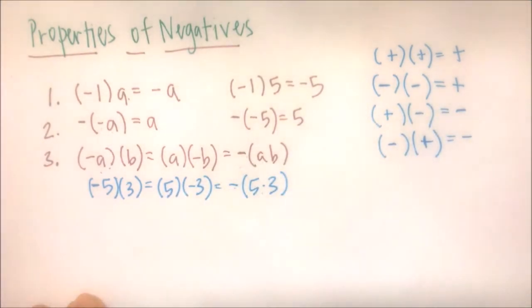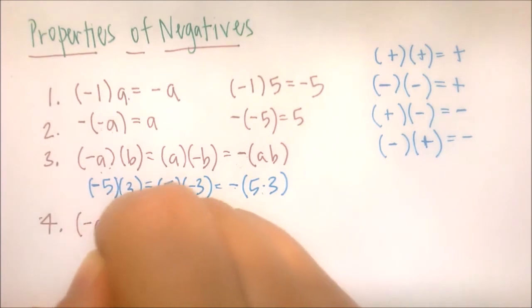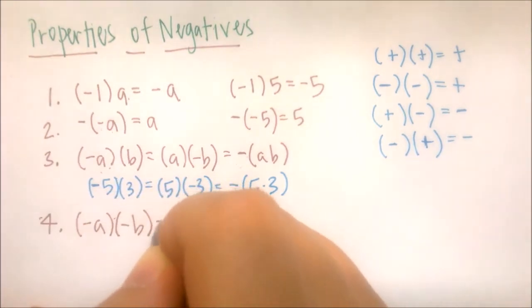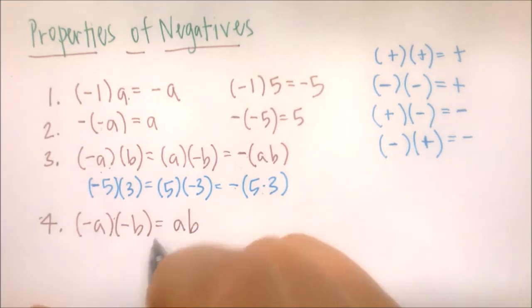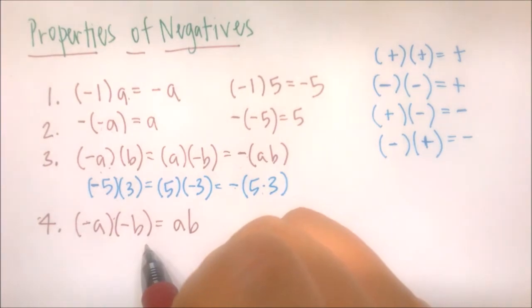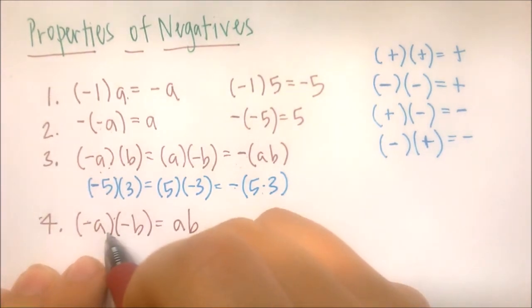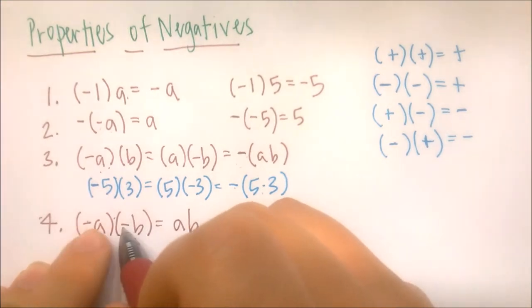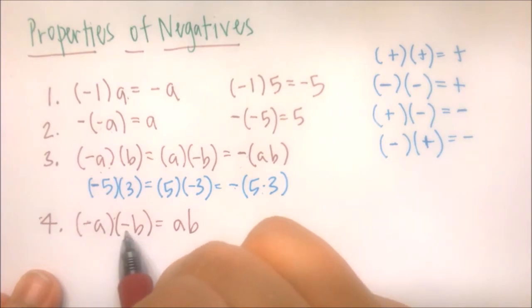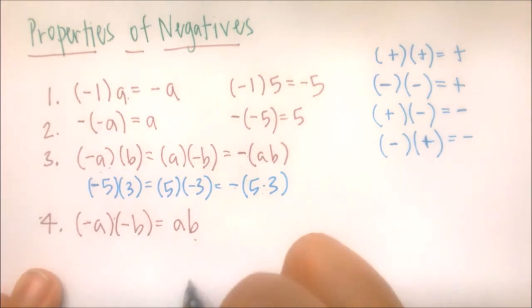The fourth property is that negative a times negative b is the same thing as a times b. This is because, when multiplying, the order doesn't matter since multiplication is commutative and associative. We can multiply the negatives together — negative times negative is positive — and then a times b, so we just get positive ab.